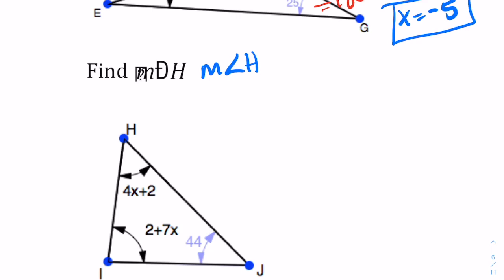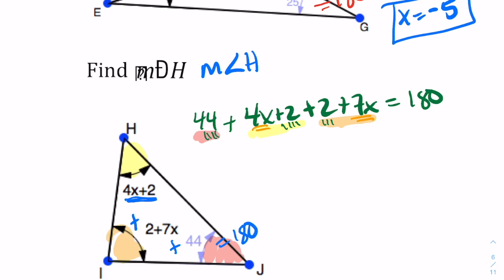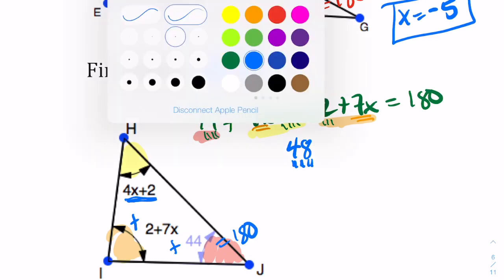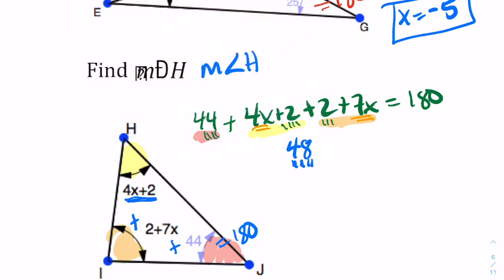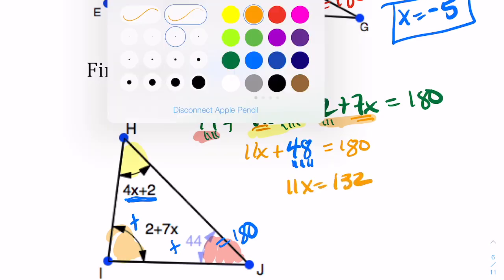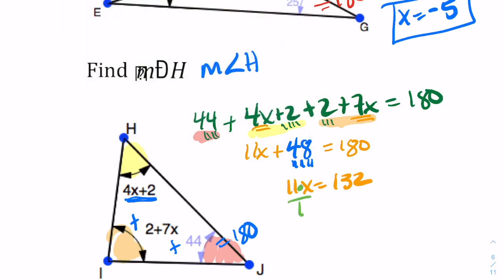To find the measurement of angle H, given as 4X plus 2, we first need to find X. So we do 4X plus 2 plus 2 plus 7X plus 44 — all added together equals 180. The like terms 44, 2, and 2 give us 48, and 4X and 7X give us 11X. So 11X plus 48 equals 180. Subtracting 48 gives us 132, then dividing by 11 gives us X equals 12.